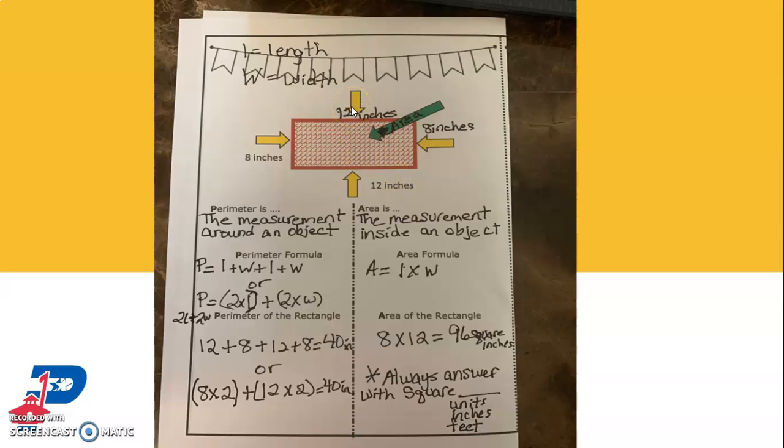But it doesn't tell us what the width on the other side is. But we know it's a rectangle. So these are parallel and they are the same size, the same length. So we can figure that out by doing 12 times 2.